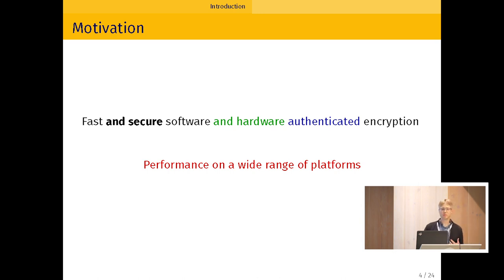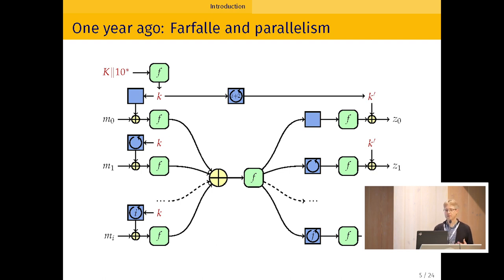So one way to do this would be to have some very small primitive that can be used in a mode or construction where there is a lot of parallelism. So the small device can just compute this primitive serially, but then as the platform grows, this primitive can be computed several times in parallel as much as the platform allows it. And so last year we presented something called Farfalle. It's a construction based on permutations, and it has a lot of parallelism. So let me go briefly through it.